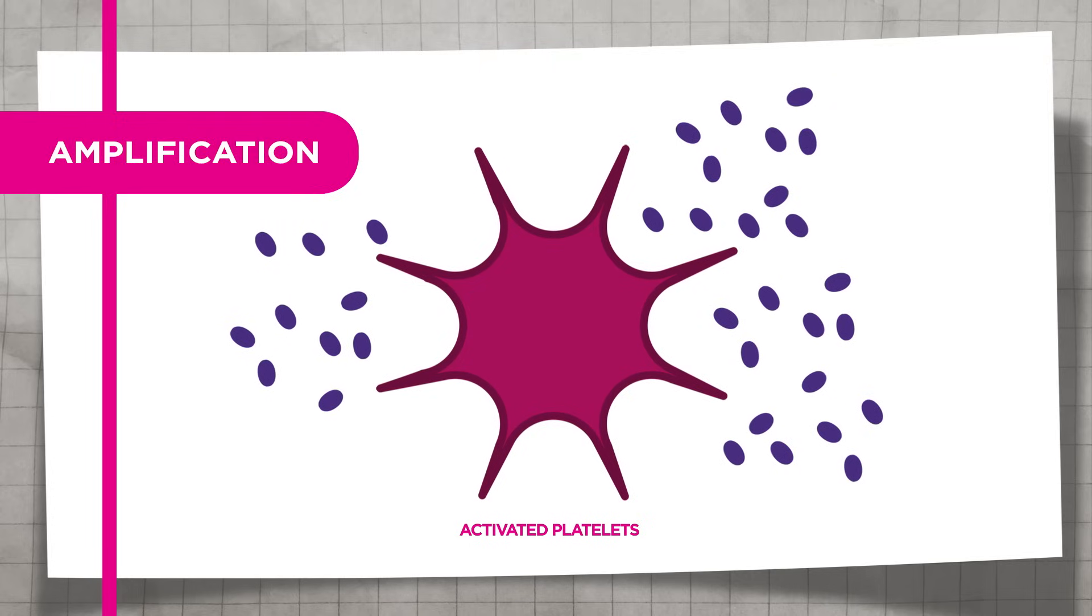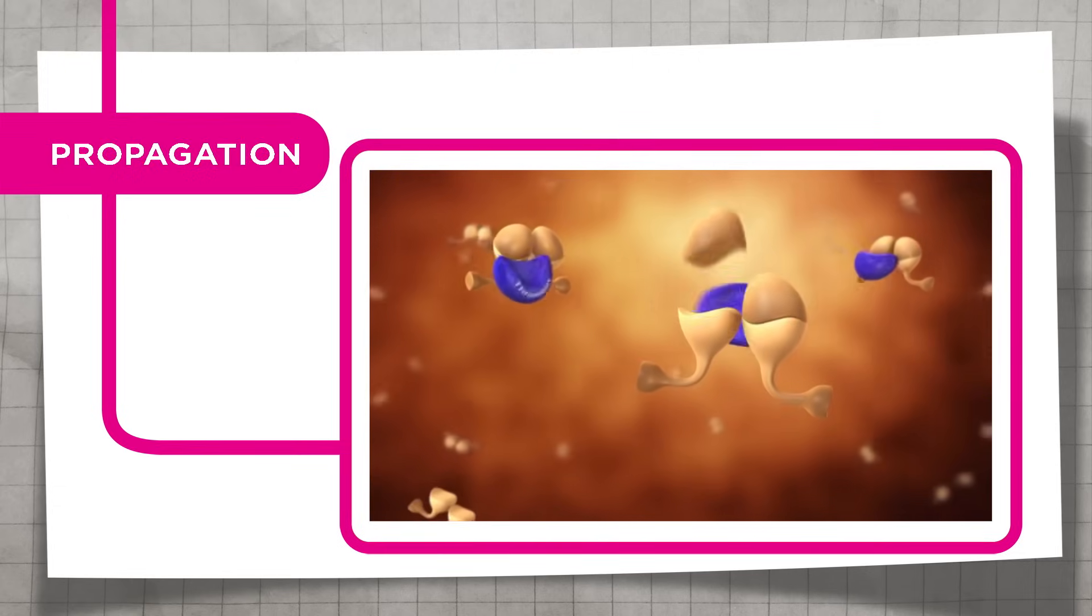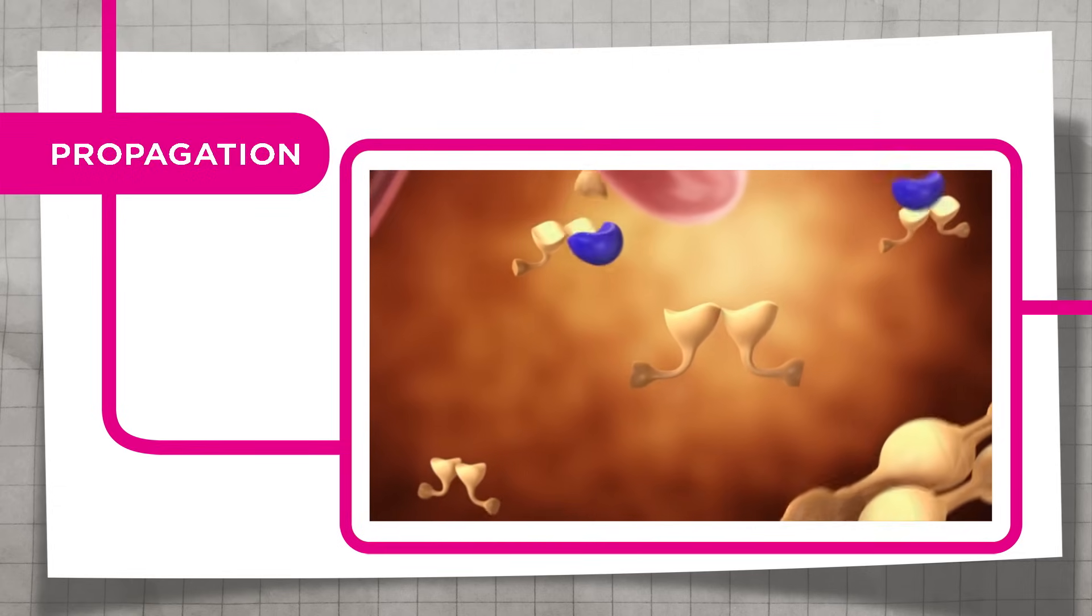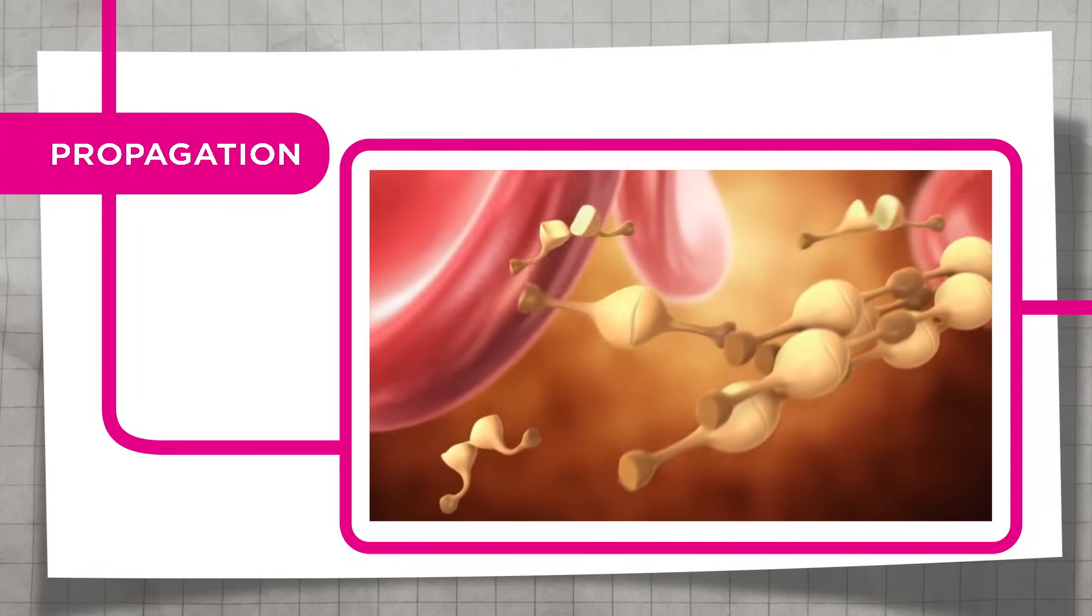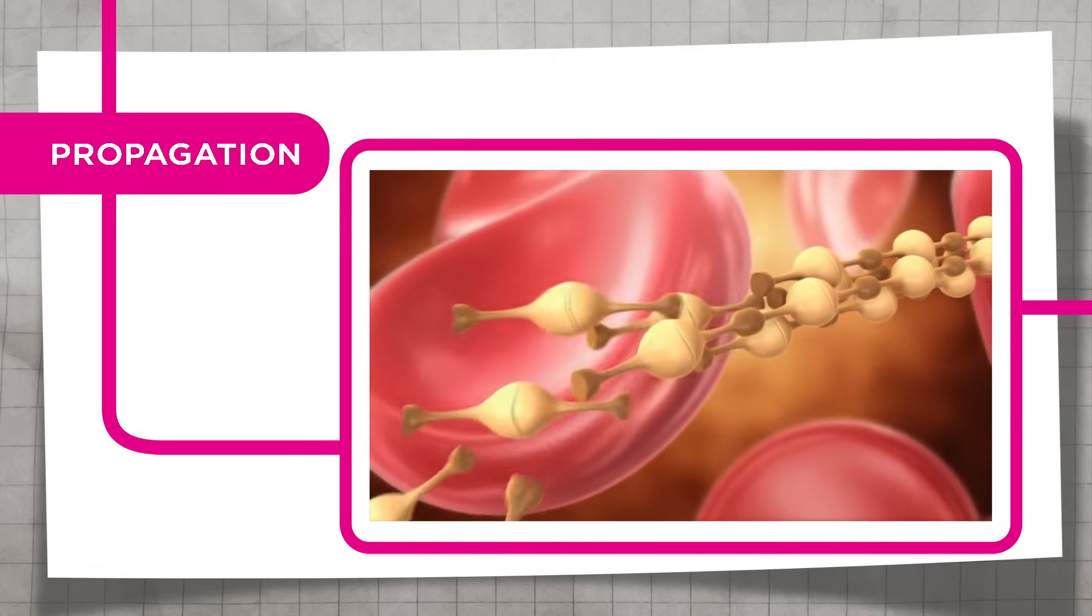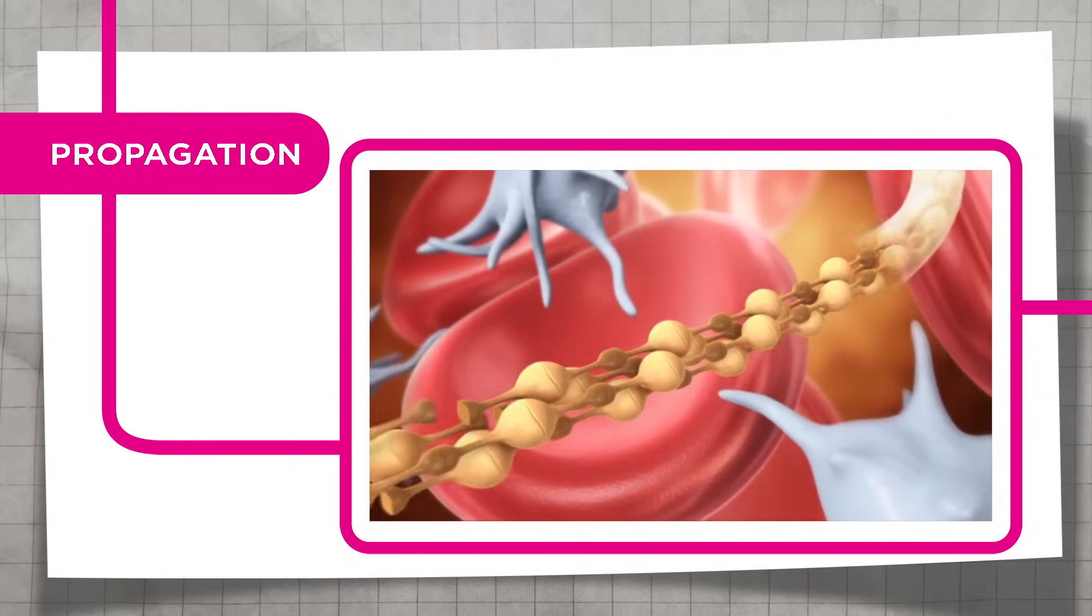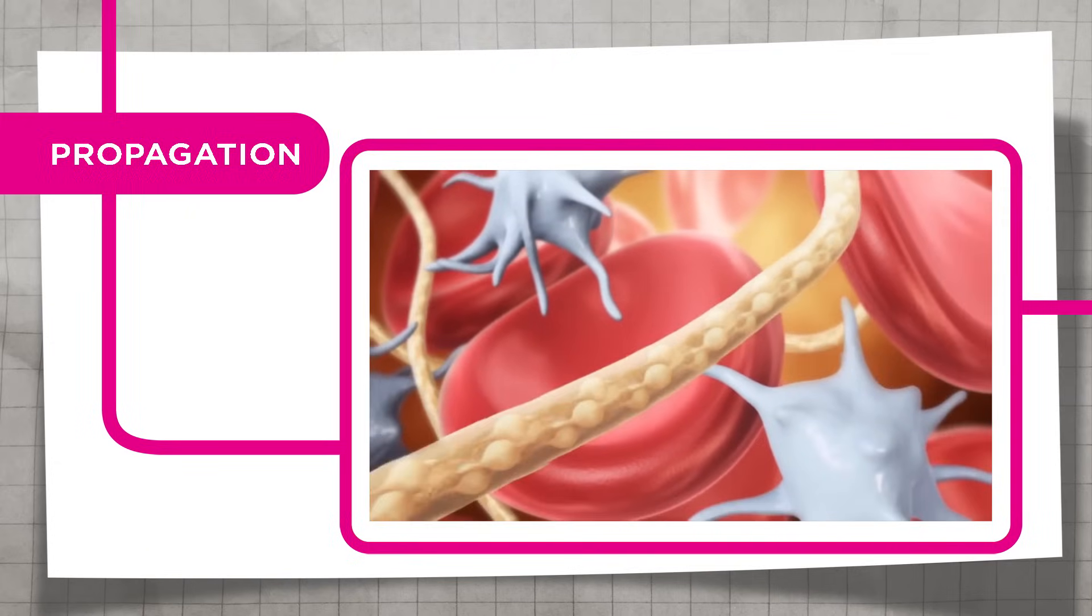One molecule of factor 10a leads to the formation of 1,000 molecules of thrombin. Thrombin converts the soluble protein fibrinogen into insoluble fibrin strands at the site of vessel injury, while at the same time activating factor 13 protein to cross-link the fibers.